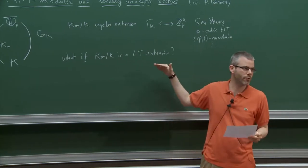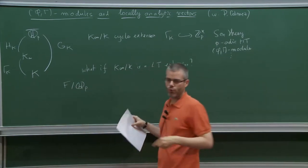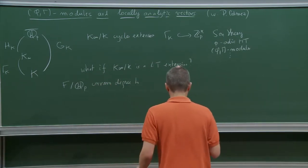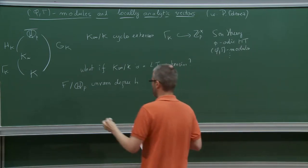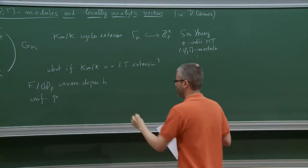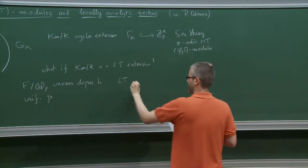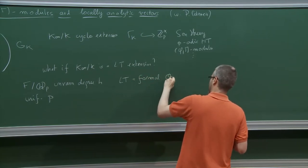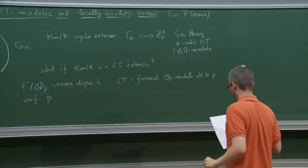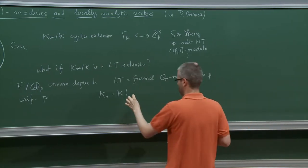I'm going to work in the simplest possible setting. Let F be the unramified extension of Q_p of degree h. Let me choose p as the uniformizer of O_F. Let me denote, like Peter did, by LT the formal O_F-module attached to p. And K_n is the extension of K generated by the p-to-the-n torsion points of LT.